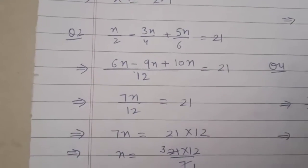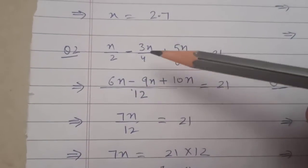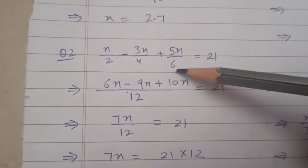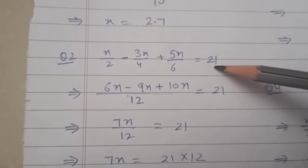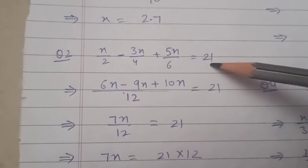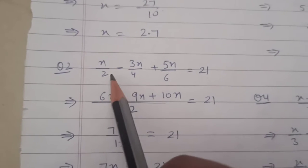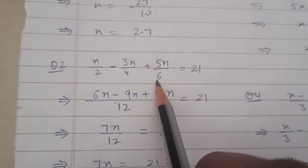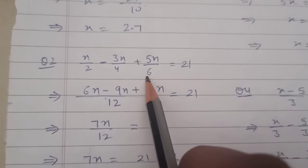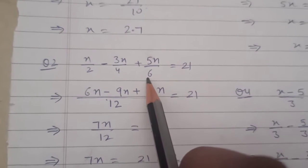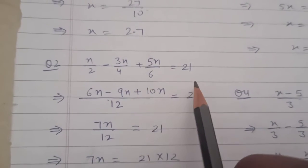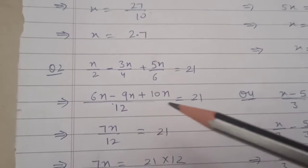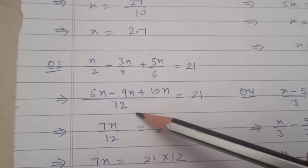Now next question: x upon 2 minus 3x upon 4 plus 5x upon 6 is equal to 20. Now here all the variables are already on the same side, so we do not need to transpose them to the other side. Take LCM of 2, 4, and 6, which gives 12.